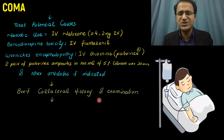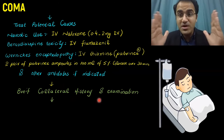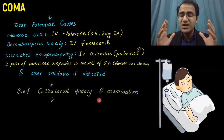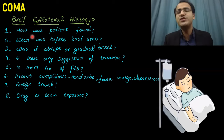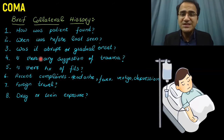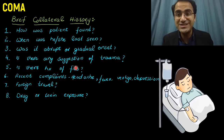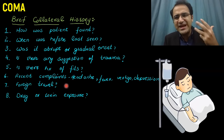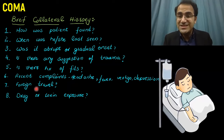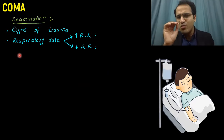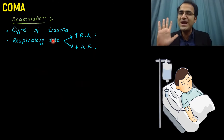Take a brief collateral history and do examination. In the collateral history, ask: how was the patient found? When were they last seen okay? Was the onset abrupt or gradual? Is there any suggestion of trauma or history of fits? Any recent complaints like headache, fever, vertigo, or depression? Any foreign travel for infectious diseases? Any chronic drugs, antidepressants, or toxin exposure — for example, was a heater on all night, which could lead to carbon monoxide poisoning? Look for signs of trauma and stabilize the spine if indicated.